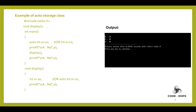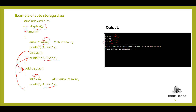Let's see an example of the auto storage class. Inside the main function, one automatic variable 'a' is declared and assigned value 10. The value of 'a' is printed as 10. Then the display function is called — inside it, the same variable 'a' is declared and assigned 20, so the value of 'a' prints as 20. After the function returns, control goes back to main and the value of 'a' is 10 again, demonstrating that the scope of automatic variables is local.